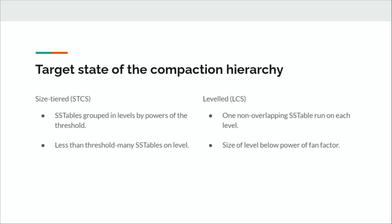A compaction strategy works by looking at the current state and deciding whether it's the desired state. If not, it does a compaction to achieve it. For size-tiered compaction, SSTables are grouped by levels based on powers of the threshold — every compaction grows the output SSTable size by the threshold factor. The number of levels is logarithmic in the data size, and each level maintains fewer than threshold-many SSTables. For leveled compaction, it maintains one non-overlapping SSTable run per level and manually tracks level assignments based on size limits that grow by powers of the fan factor.